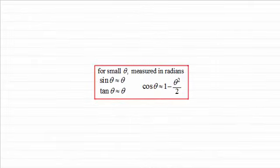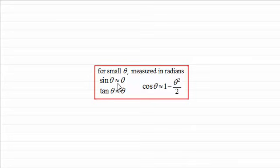Hi there. In this video, what I want to do is show you how we can obtain these results for small angles. If theta is a small angle measured in radians, then I'm going to show you that sine theta is approximately the same as theta, tan theta is approximately the same as theta, and cosine of theta is approximately the same as 1 minus theta squared over 2. These results are very useful when we want to find limits of other trigonometric functions. So if you want to know the proof, I'll take you through it.